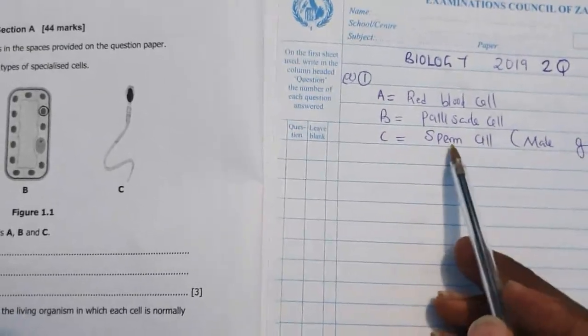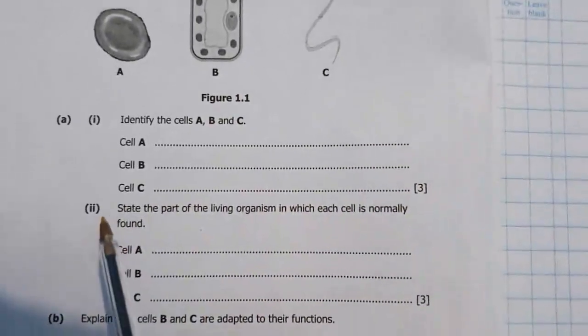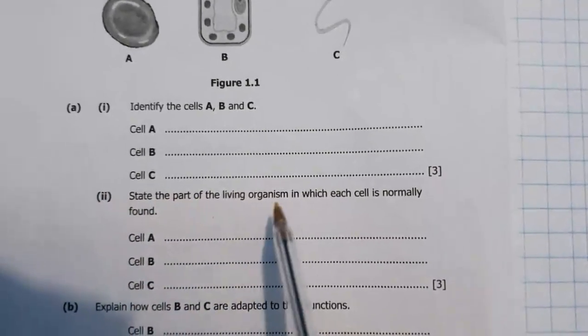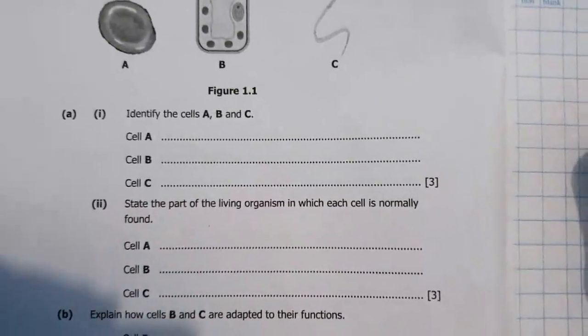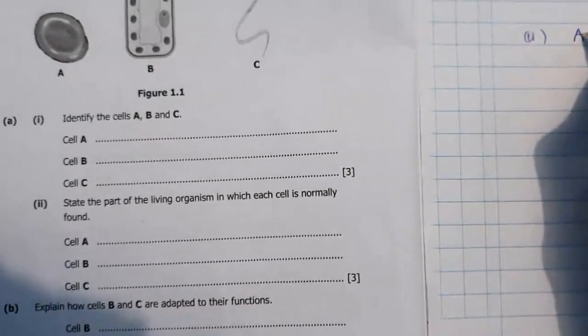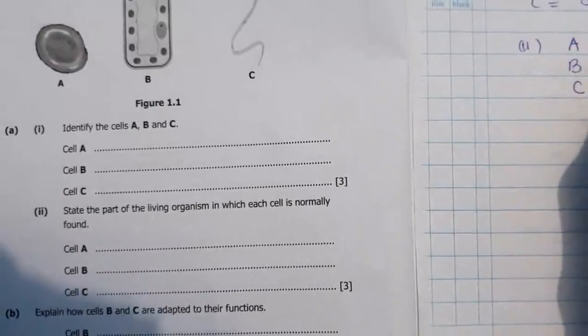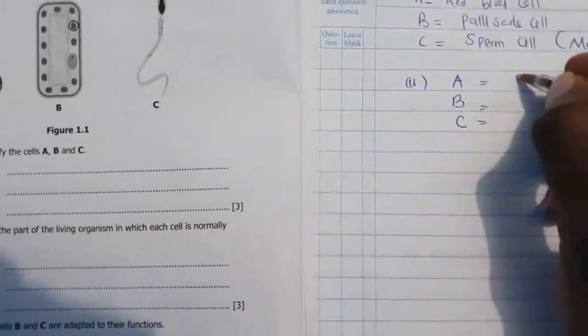Then question A2 state the part of the living organism in which its cell is normally found. So part 2, where can we find cell A, where can we find cell B, where can we find cell C? Cell A, where can we find it? It's just in blood, it's a red blood cell after all.